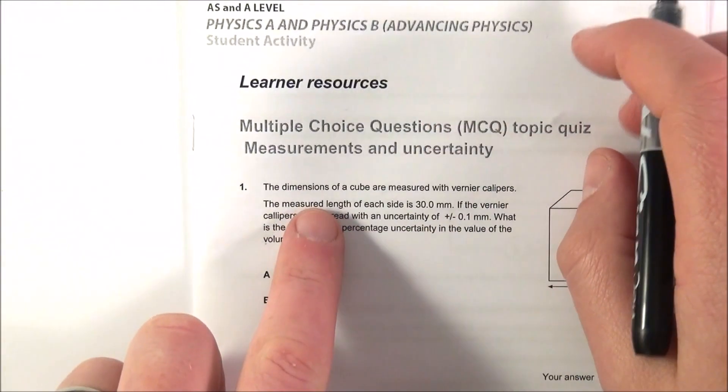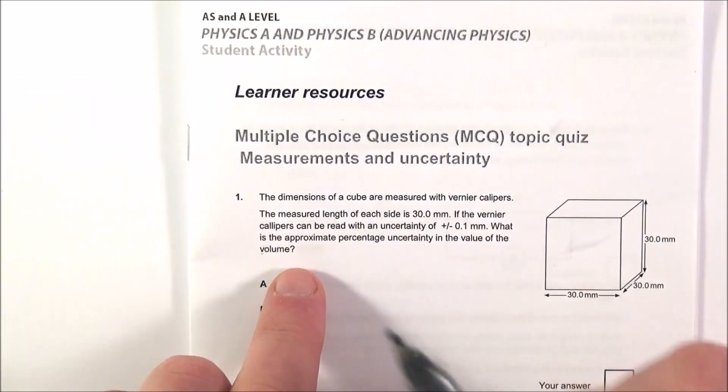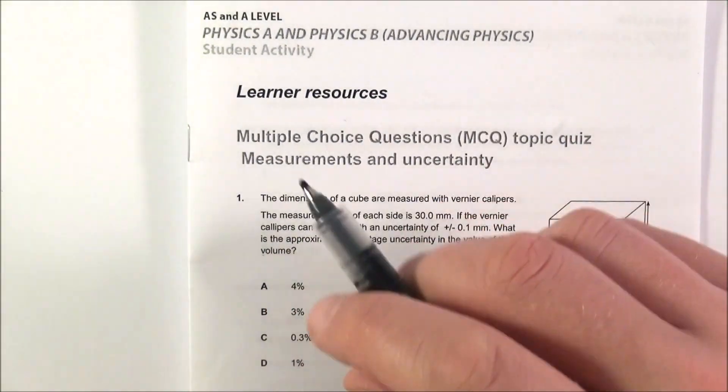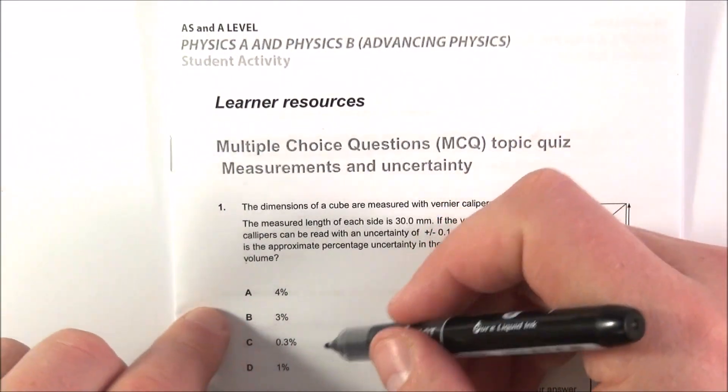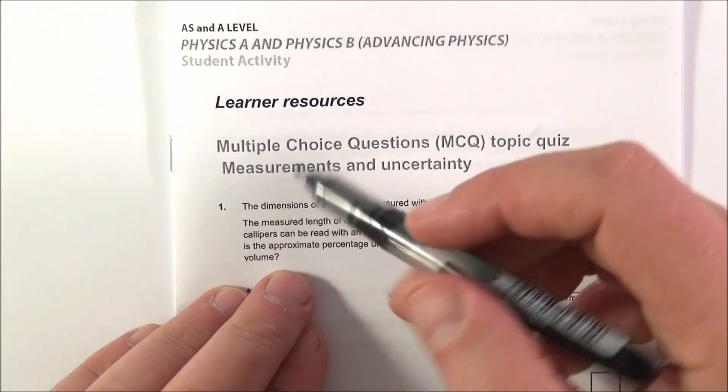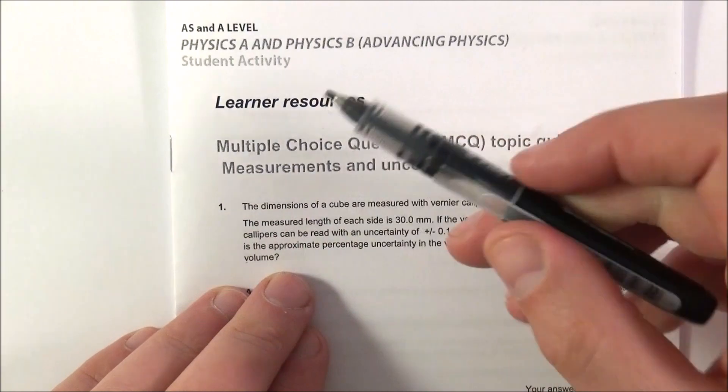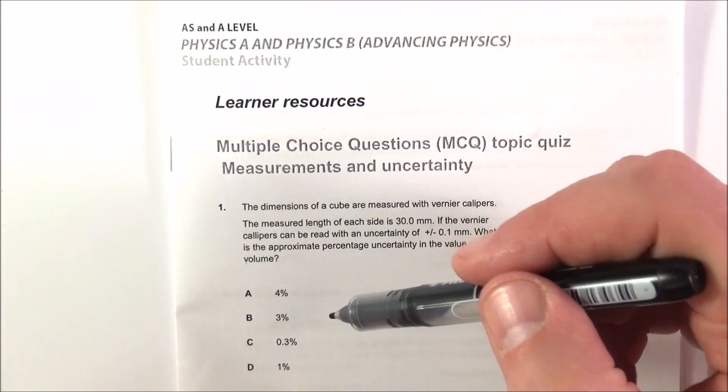If you get a question like this one over here, it's asking you to calculate something. The best piece of advice that I can give, and the OCR give as well, is that you do not look at the answers. If you look at the answers, some of these might distract you. So if it's a calculation, cover this up somehow, do your working out, find your answer, then check that's one of the ones beneath it.